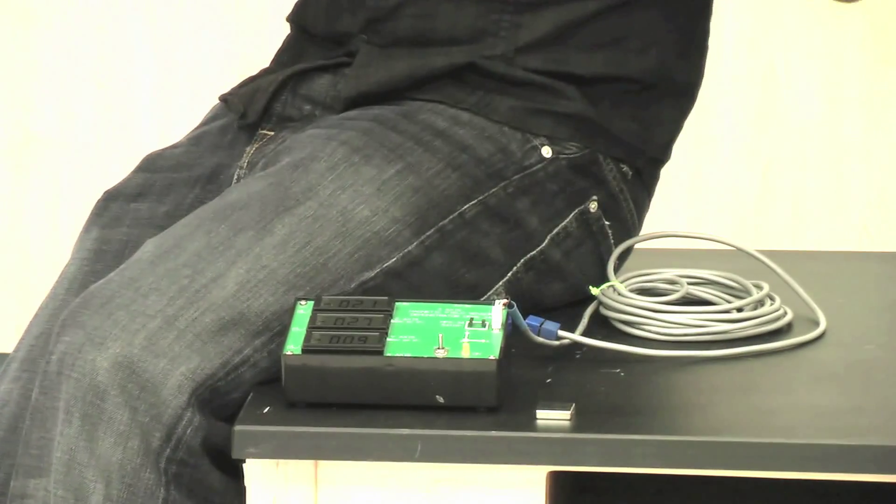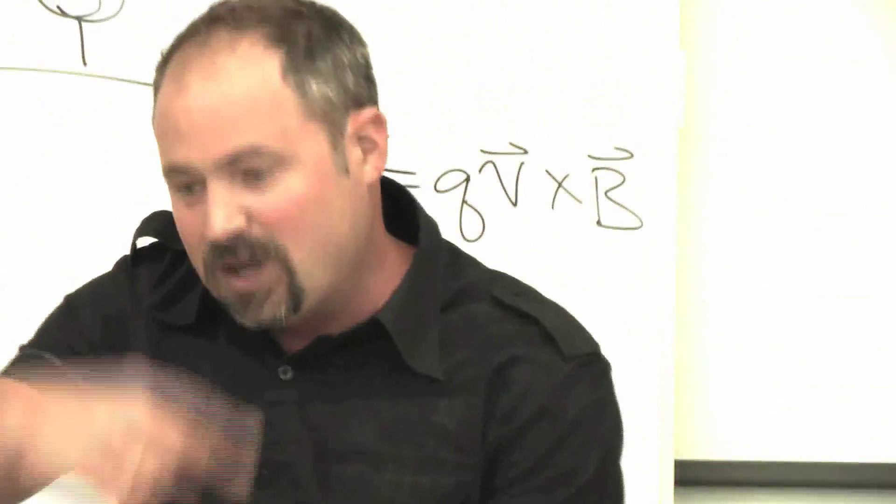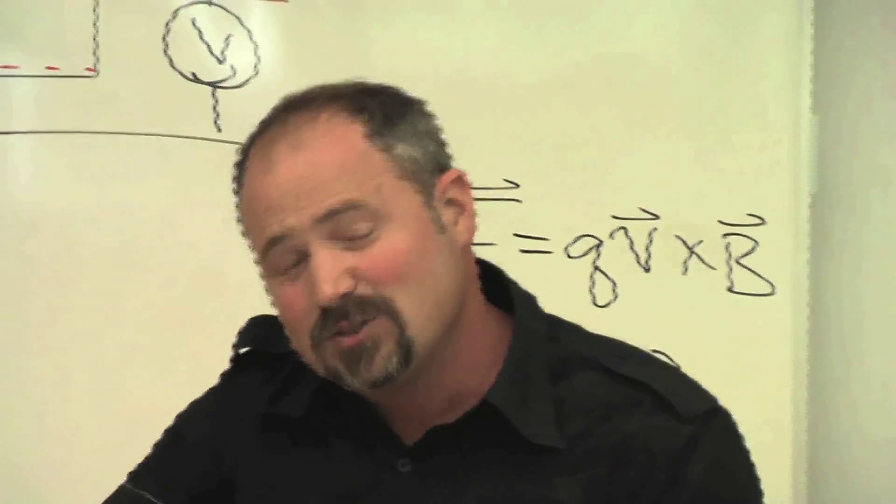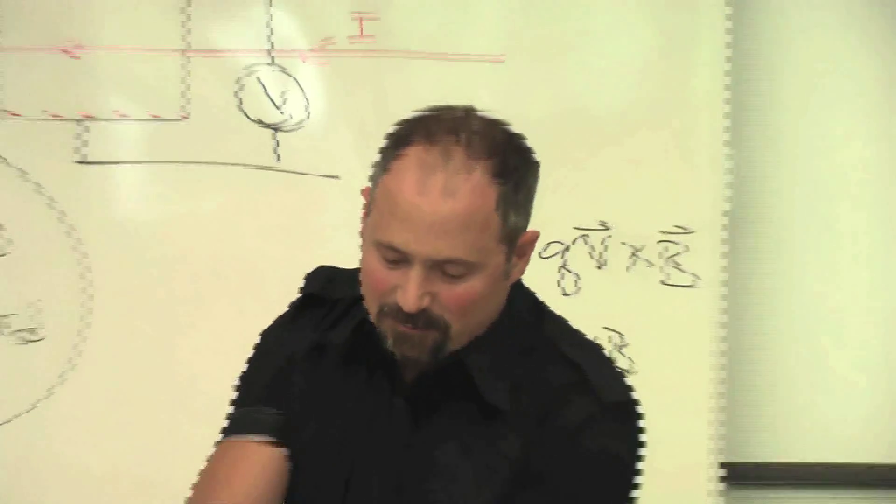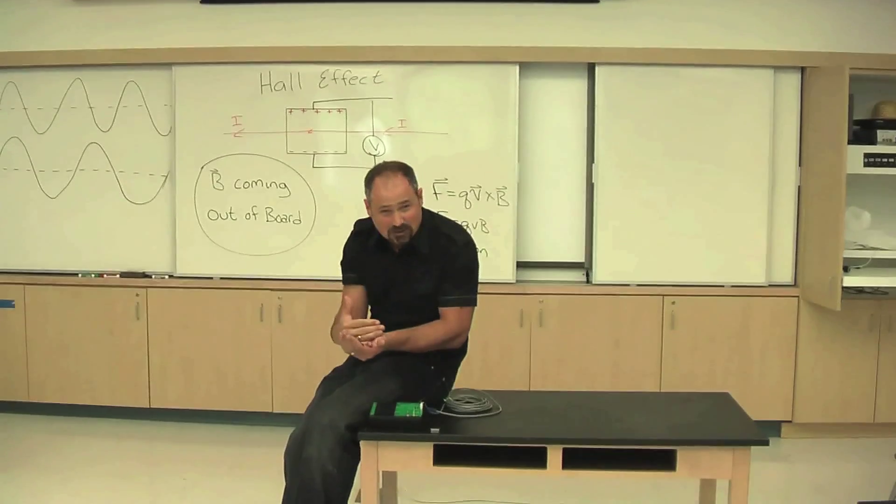It's also an unintrusive way to measure electricity. Because we know when you have electricity flowing this way, for example, you get a magnetic field going around it. So you can put a Hall chip on the outside of your electricity cable to tell you how much electricity is going on inside.